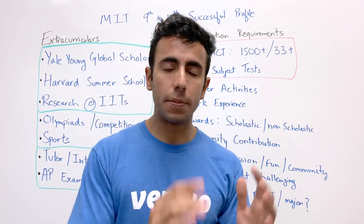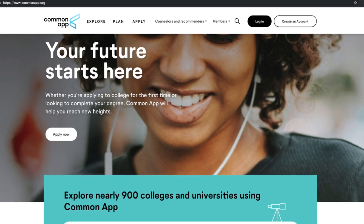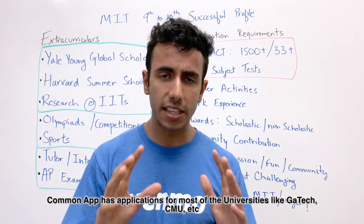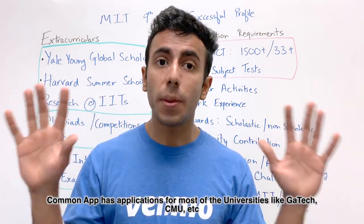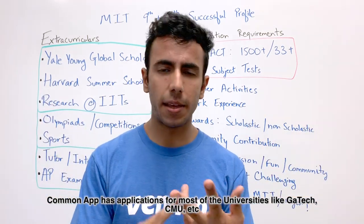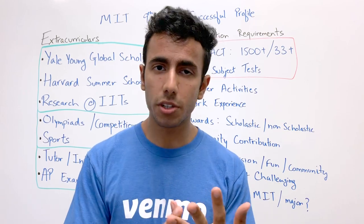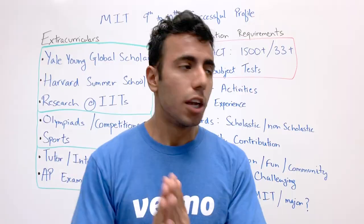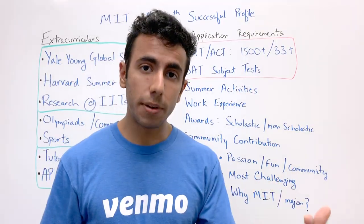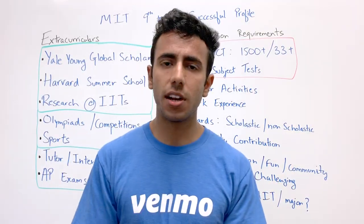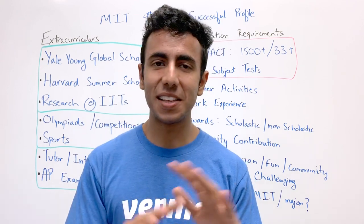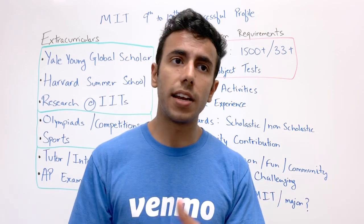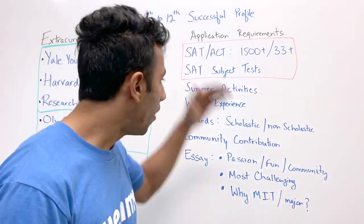The MIT profile is different from the Common App. Common App is a big website — commonapp.org — where most major universities have their applications, like Georgia Tech, Carnegie Mellon, and University of Michigan. But MIT has its own application on their own website. You'll go there and fill in basic information: date of birth, family details, whether you have a relative who studied at MIT, etc.